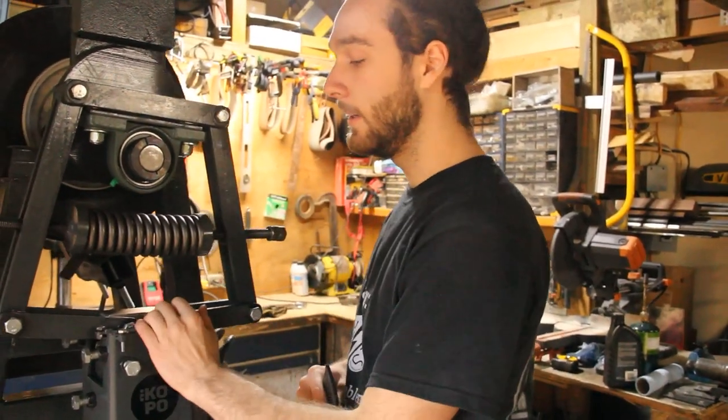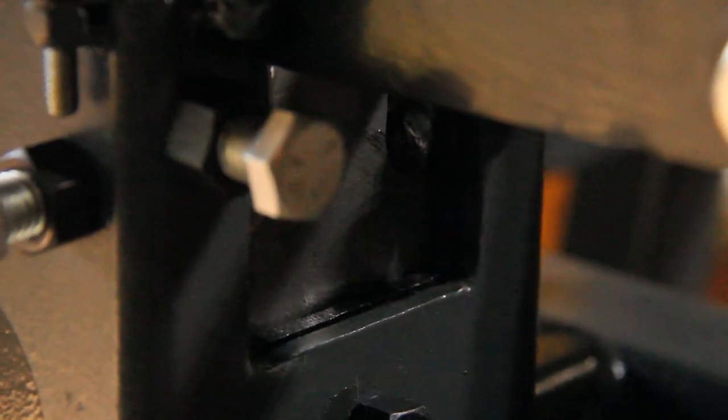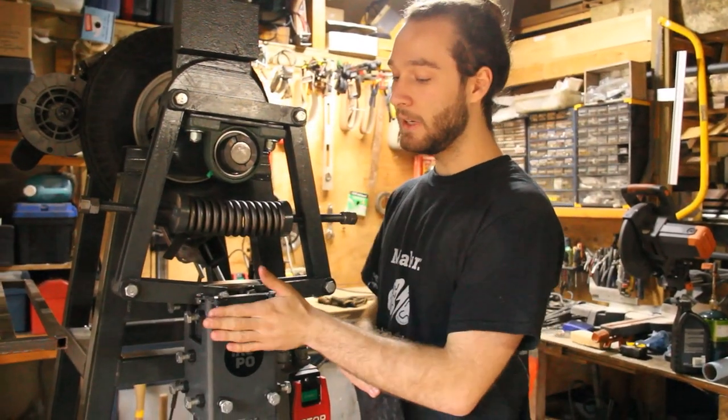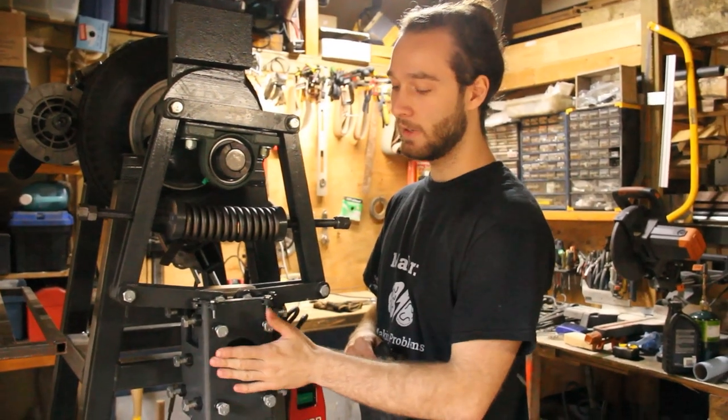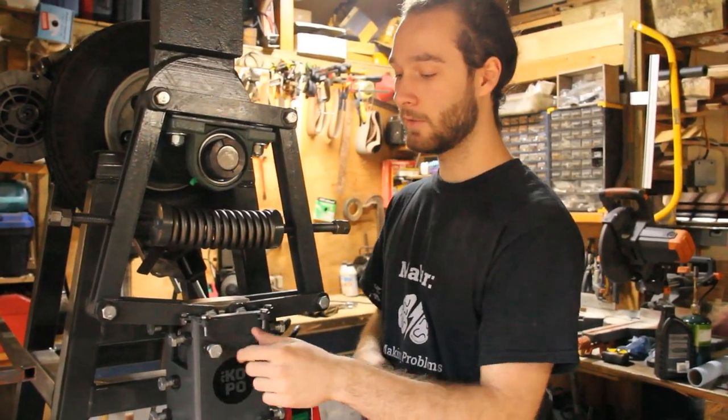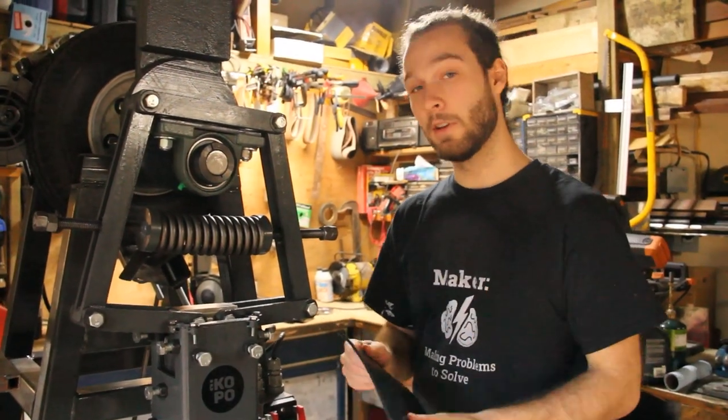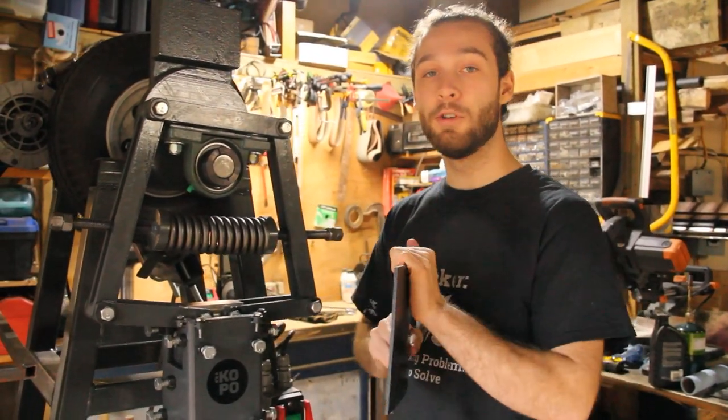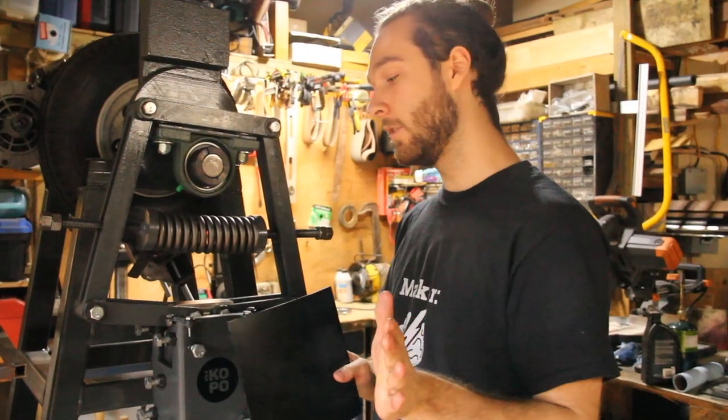So the next maintenance tip is that the UHMW sliders will wear out over time. It's normal. And you should be able to push them a bit further with the wear with these bolts. Once they're finished, you can easily get UHMW on McMaster Carr and change these sliders.